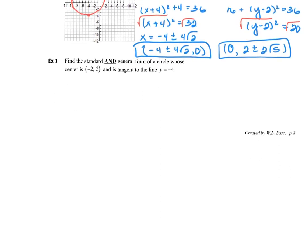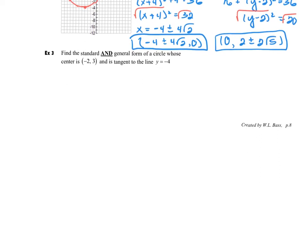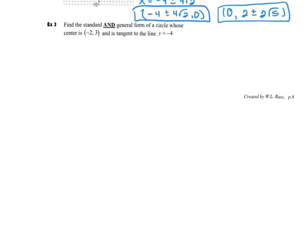All right, now my last one that I'm going to do is going to be to find the standard and the general form of a circle whose center is at 2 negative 3 and is tangent to a line at y equals negative 4. So this one's going to be helpful if we can draw ourselves just a small sketch of this. So I'm going to give myself an xy axis. I'm going to go ahead and put my center in the proper quadrant, so negative 2, 3, and I'm going to sketch in the line y equals negative 4.